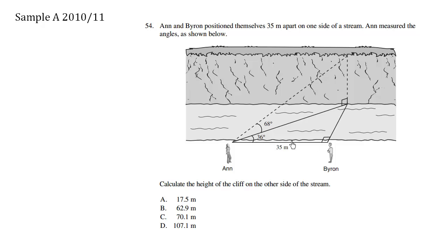Ann measured the angles as shown below. So we have some triangles here, right angle triangles. 36 degrees here and looking up towards this cliff it's going to be 68 degrees. This may not look like 68 degrees, it looks a lot smaller, but this is just because we're looking at it from a certain perspective.